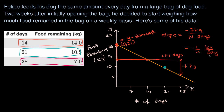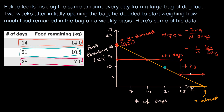How many days will the bag last? That's the x-intercept — the x value when y equals zero, meaning when there's no food remaining. We know every 14 days we use up seven kilograms. So starting from day 28, where seven kilograms remain, we go 14 more days and use up the remaining seven kilograms. The bag runs out on day 42.